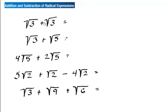Hi there, welcome students. We are looking at adding and subtracting radical expressions — that means adding and subtracting where we have a square root or radical. When we add and subtract, we're just counting how many of these things we have. In this first case we have a square root of three and we're going to add to that another square root of three, so we write that we have two of these.